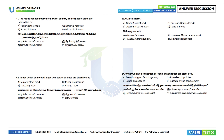41st question: The roads connecting major parts of the country and capitals of states are called national highways. 42nd question: Roads which connect villages with towns are called village roads. Option D. 43rd question: ODR road stands for Other District Road. Option D.